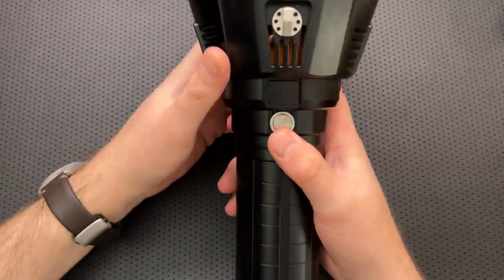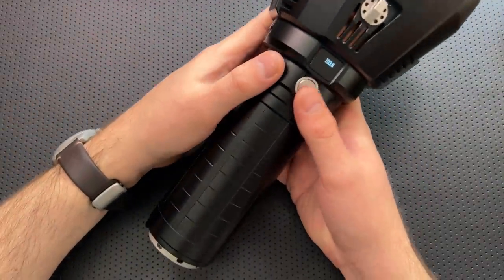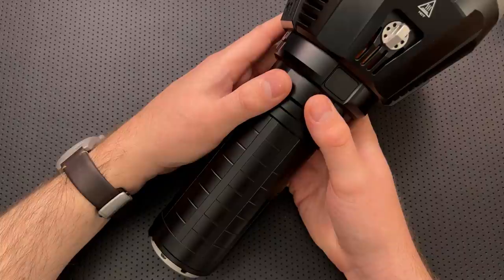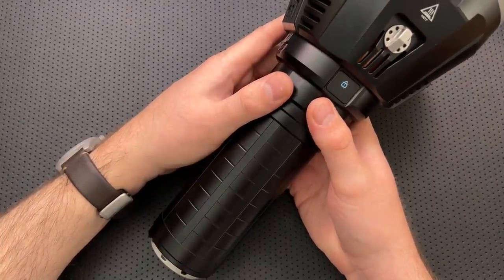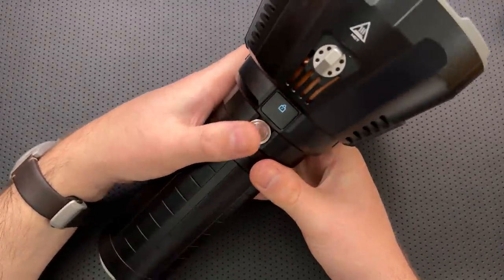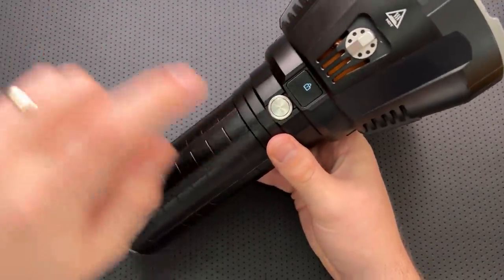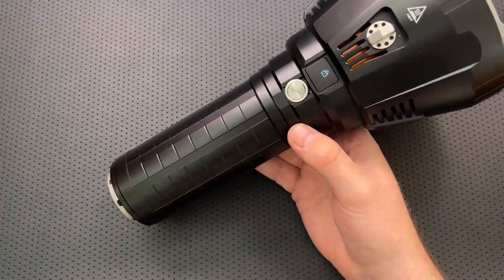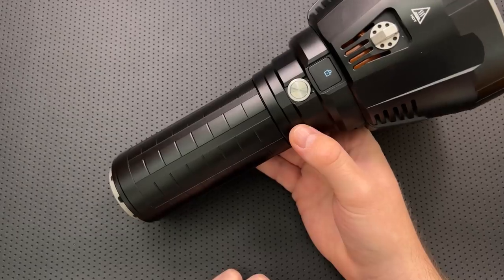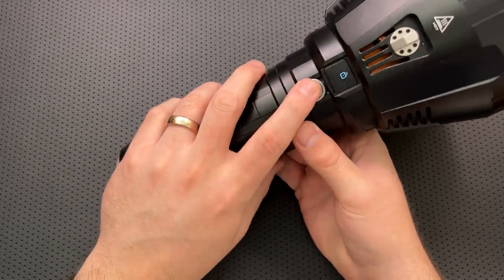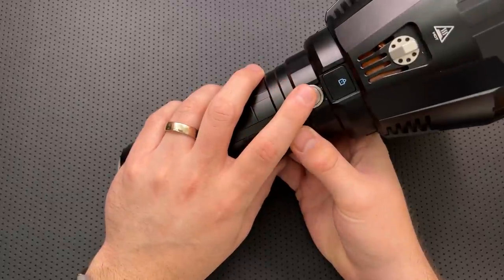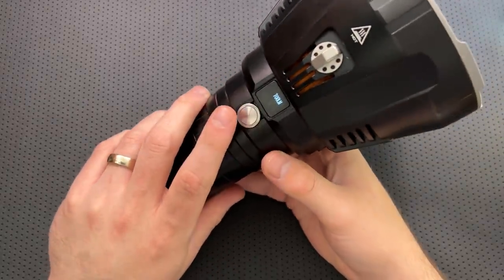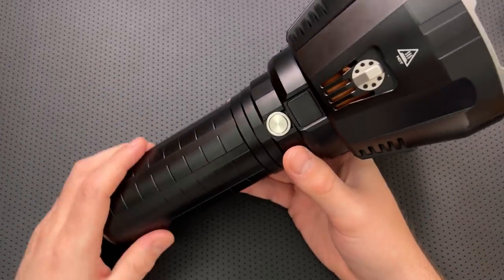Next thing, this does have a software lockout mode. So if I turn this guy on and I press this 1, 2, 3, 4, 5 times, now it's locked. And that means that if I just hit this button, nothing's going to happen except it's going to say, hey bro, I'm locked. Dude, I'm still locked. But if I hit it 5 more times, 1, 2, 3, 4, 5, now it's unlocked. And I can turn the light back on. So that's a nice thing.